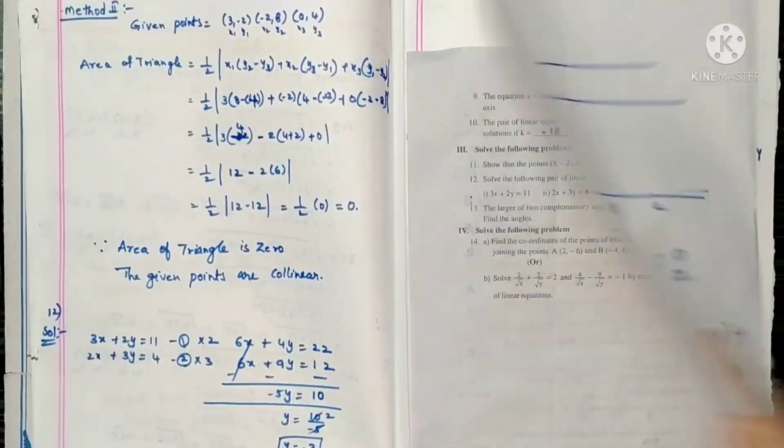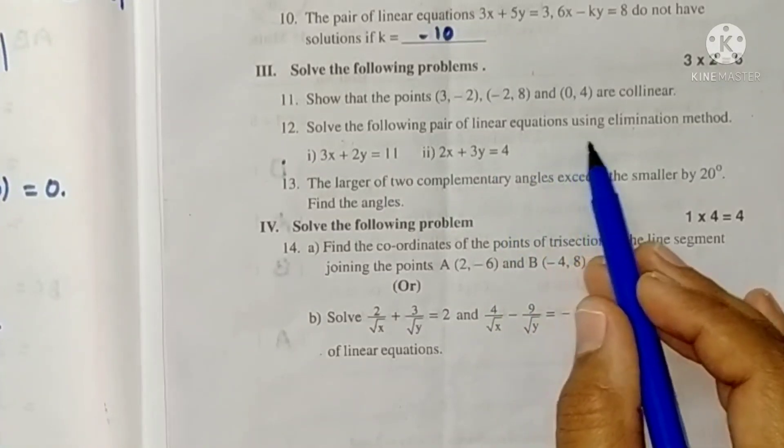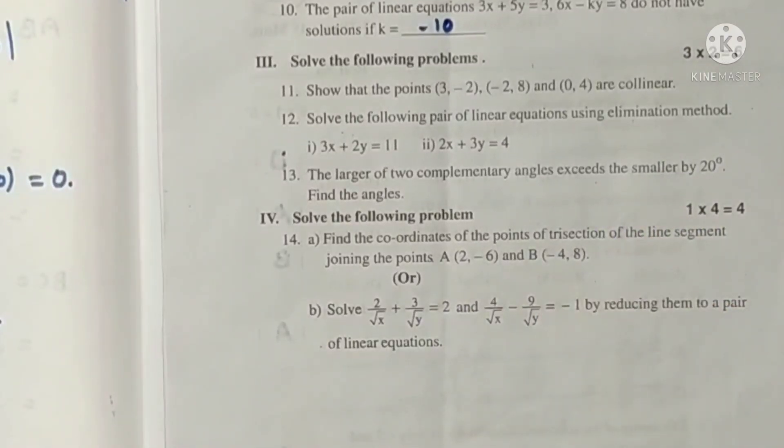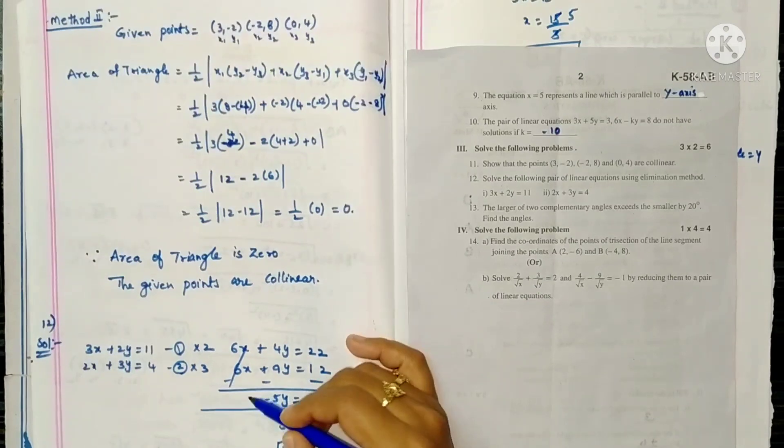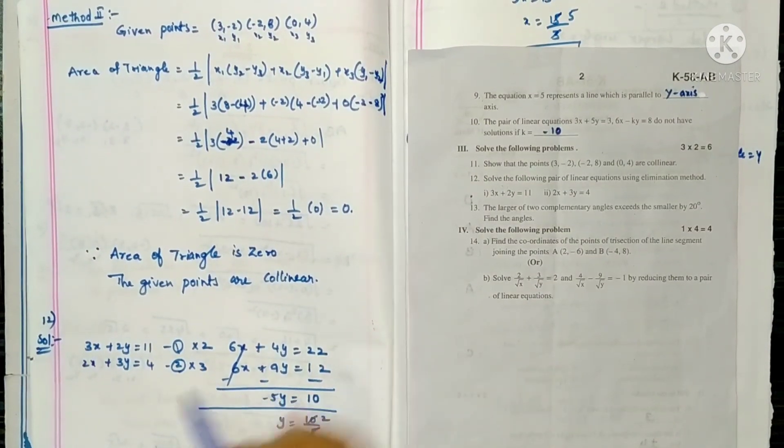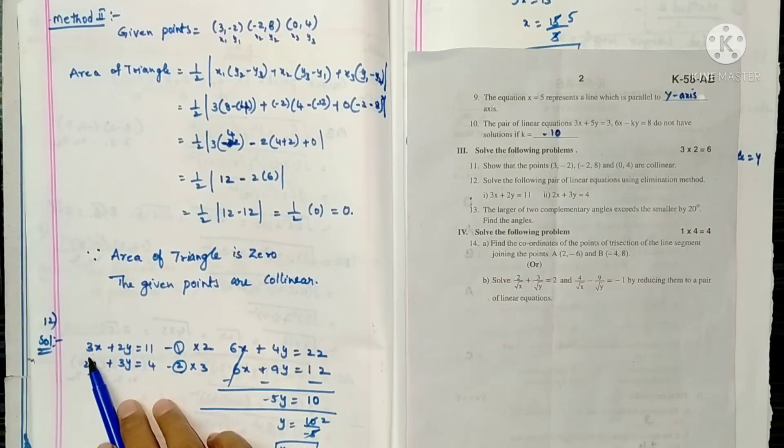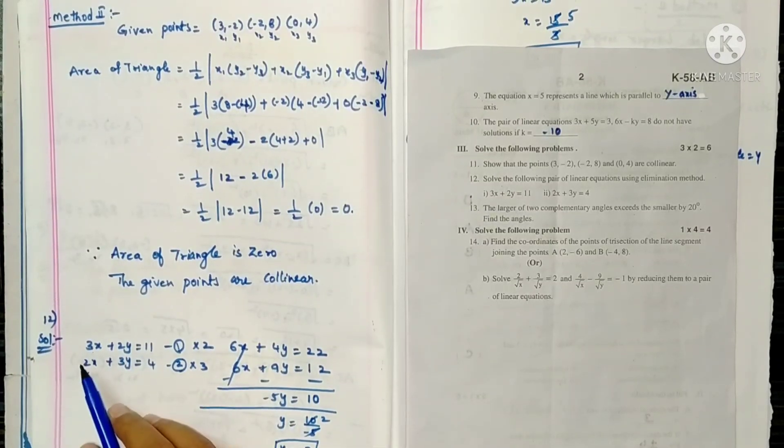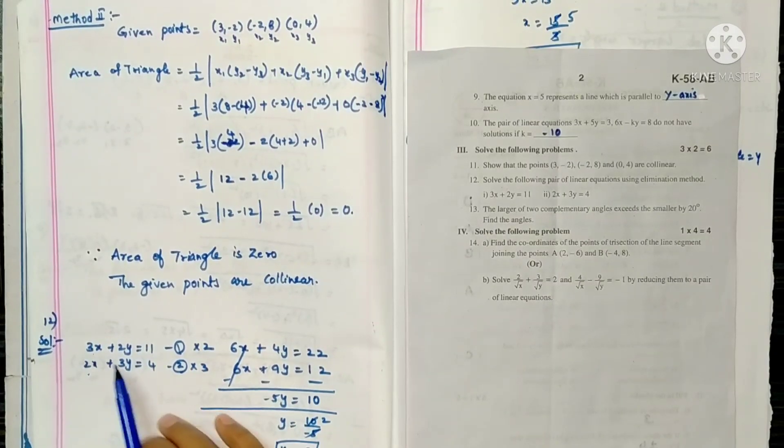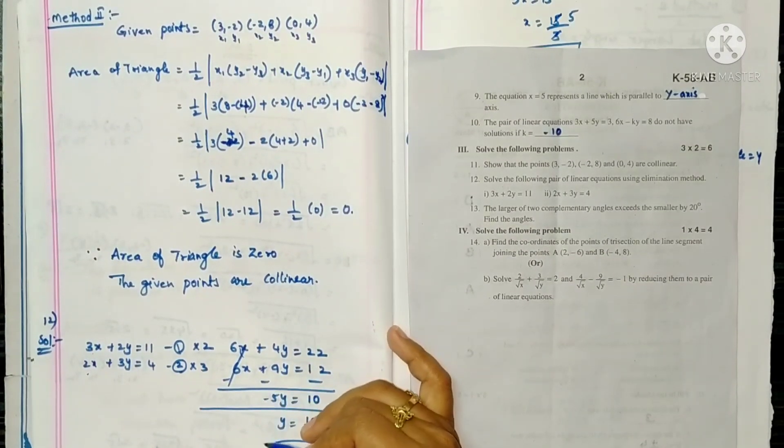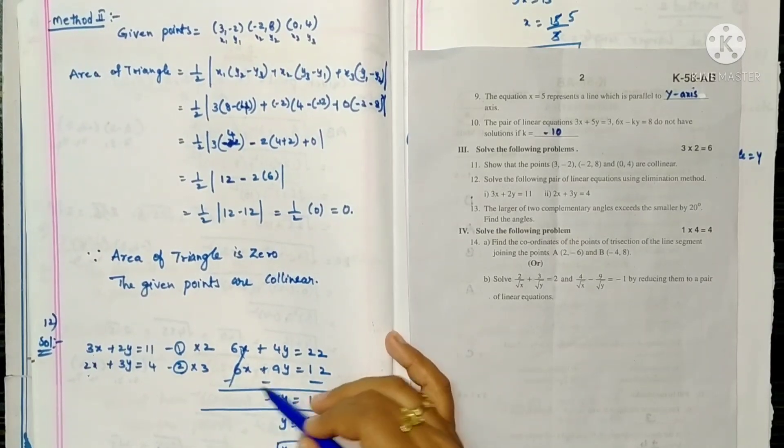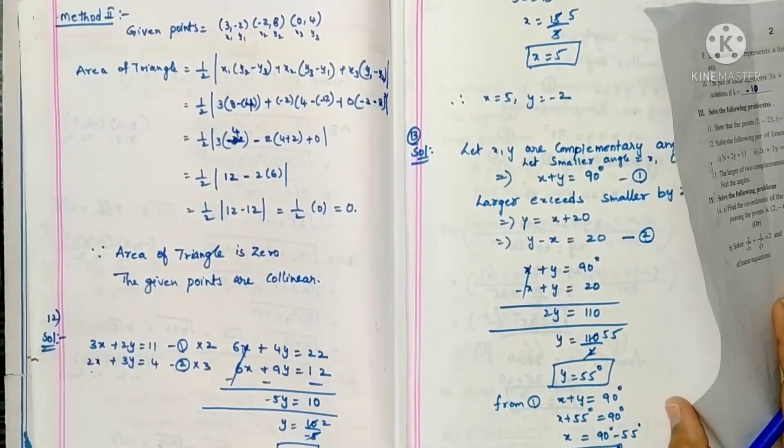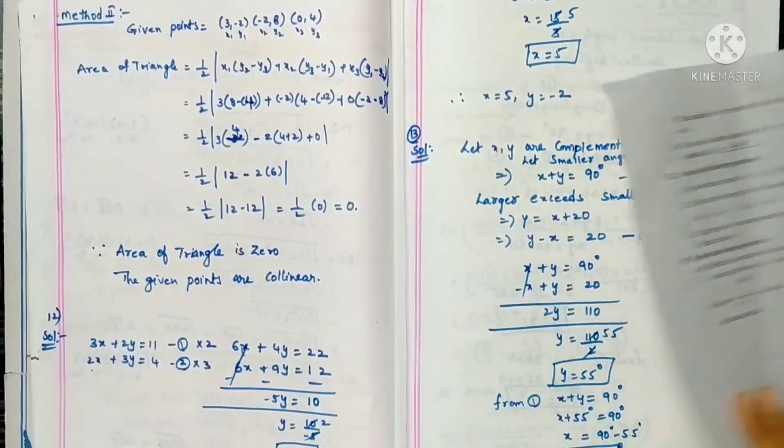Next question 12, solve the following pair of linear equations using elimination method. We will eliminate the terms. Before eliminating, the terms should be equal. So here 3 and 2, the least common factor is 6. Multiply by 2 and multiply by 3. When we add, the signs should be opposite, so we get y equals minus 2. After substituting y value in equation 1, we get x equals 5.